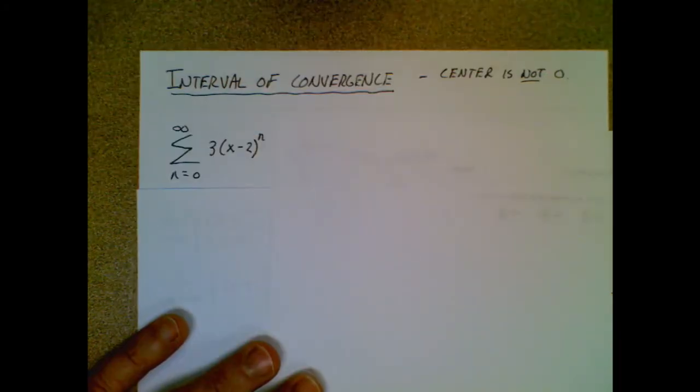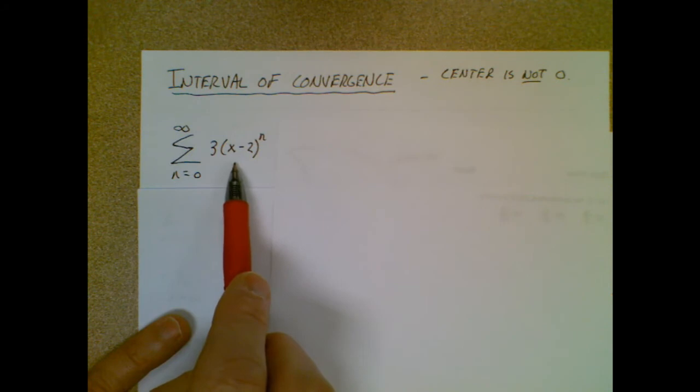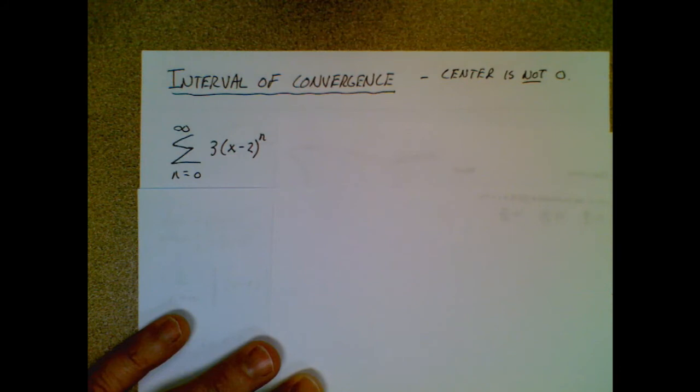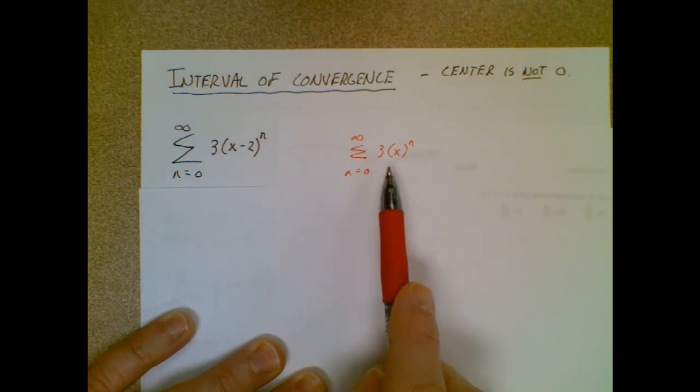The same idea is going to happen here. If I'm going to do an interval of convergence with this series, right away my eyeballs are going to spot that the center of the interval of convergence is not going to be x equals 0, it's going to be x equals 2. The series I just wrote over here would have a center of x equals 0.